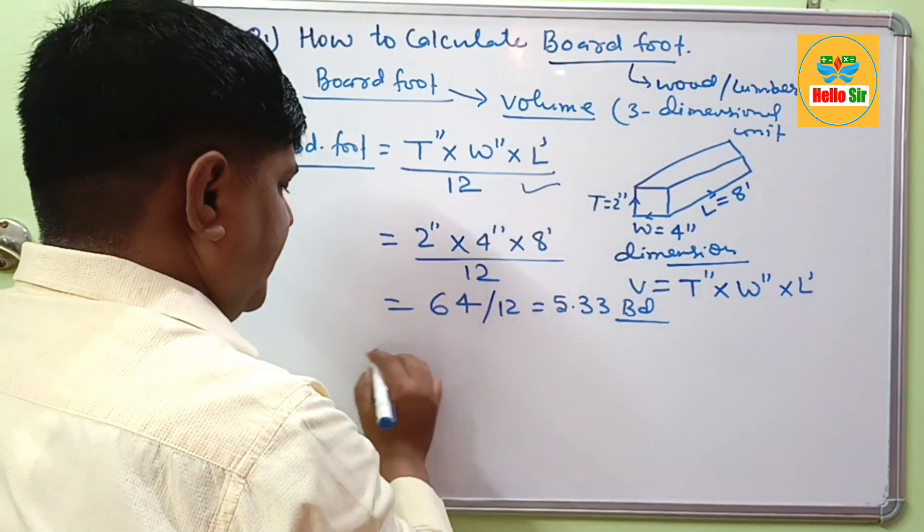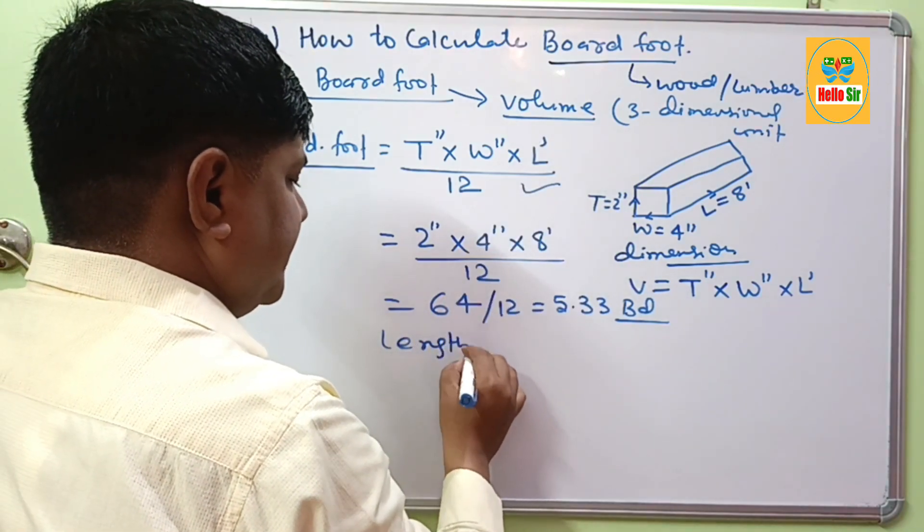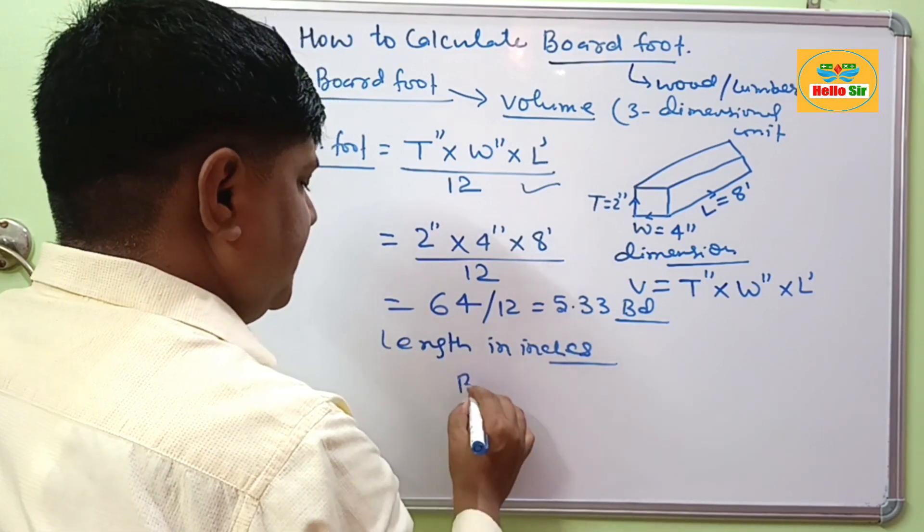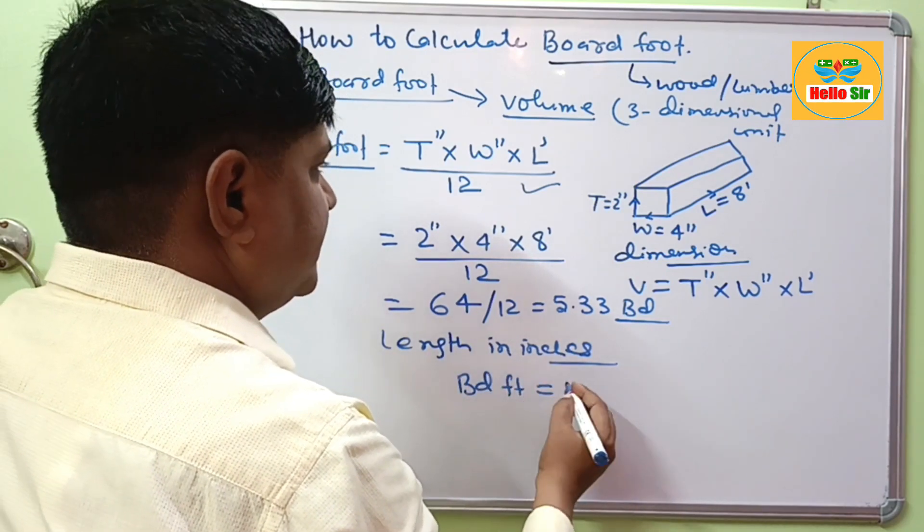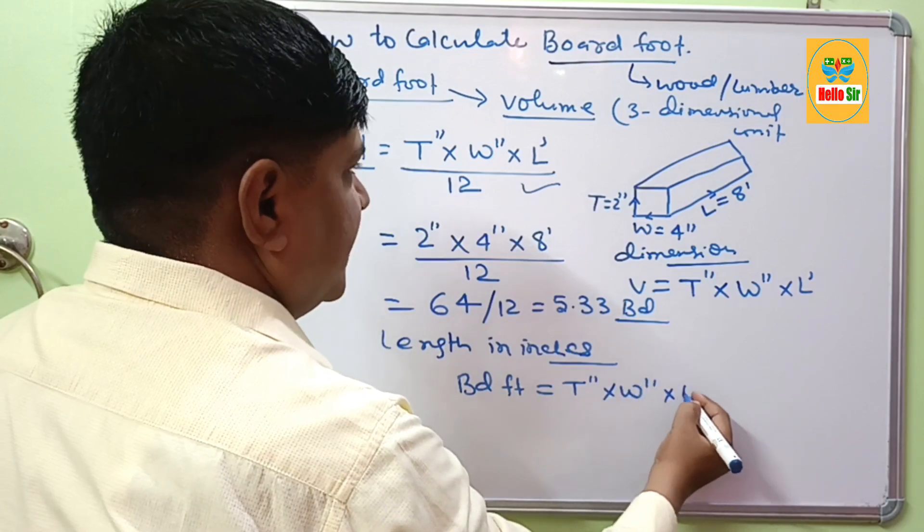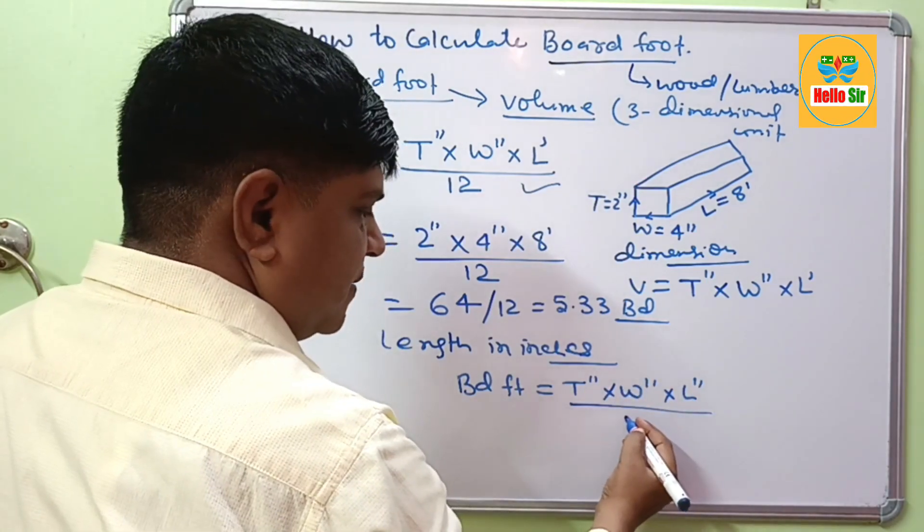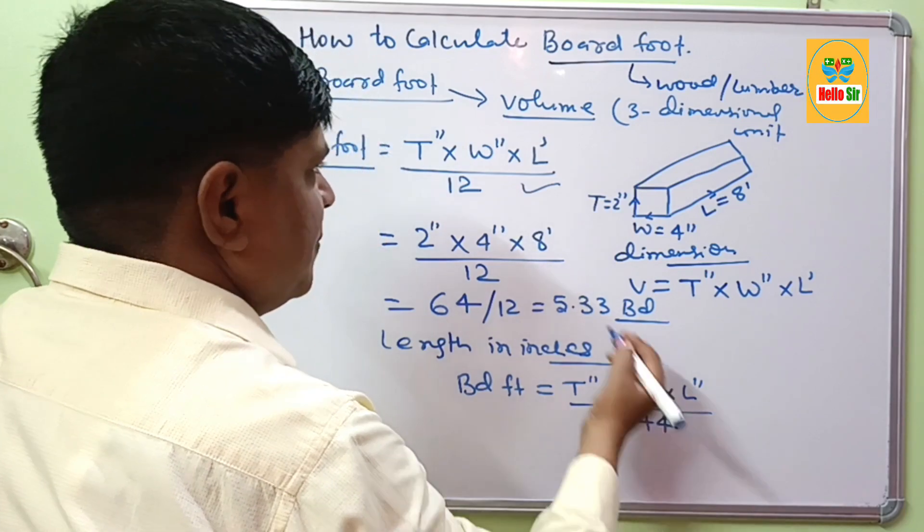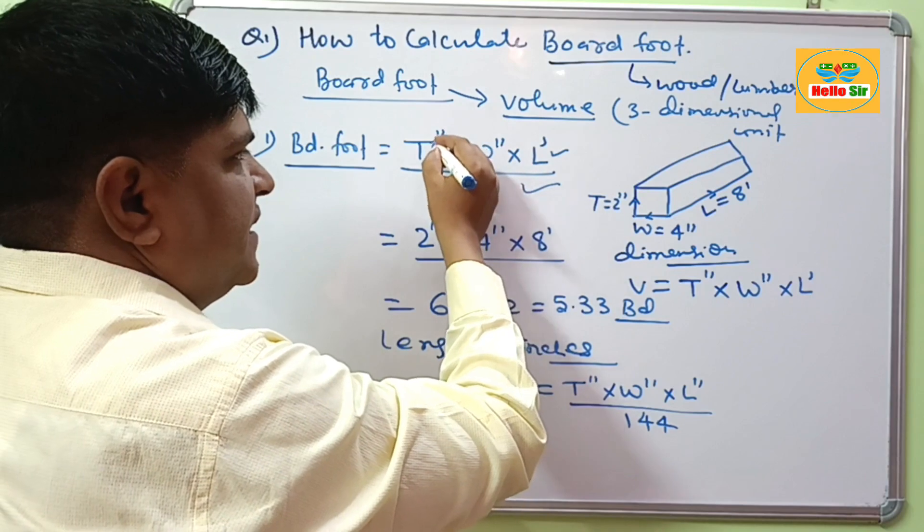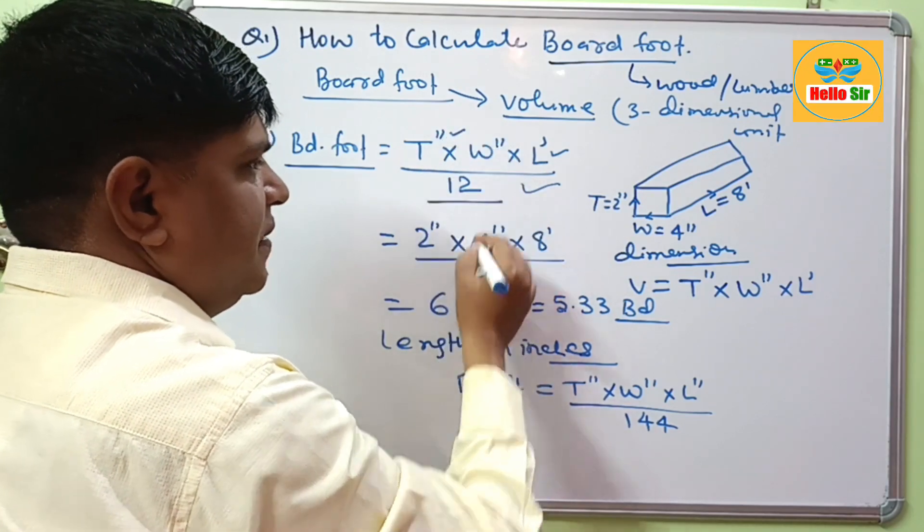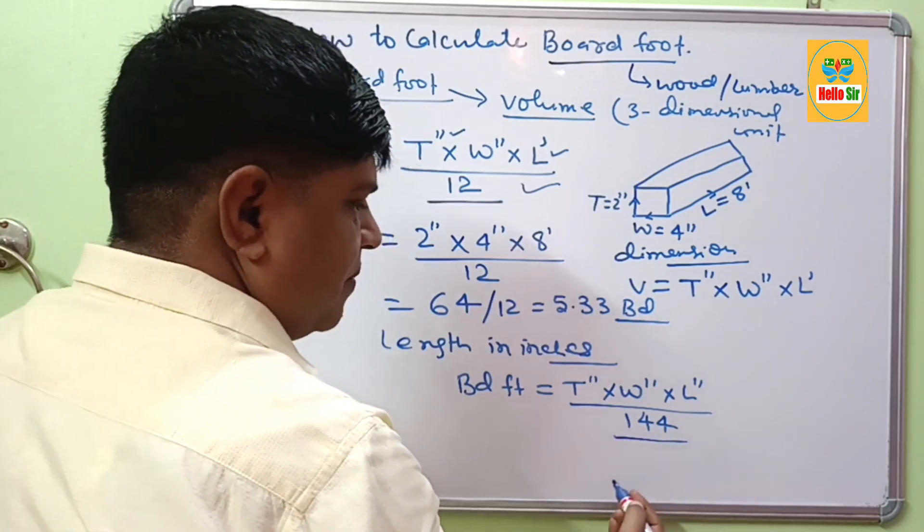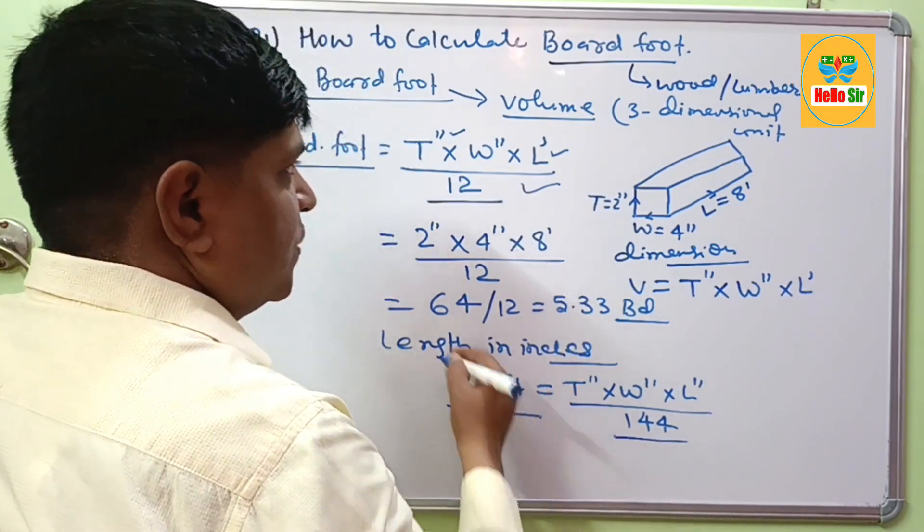And if your length is given in inches, then you use another formula. Board feet is equal to thickness in inches, width in inches and length also in inches. Then you divide by 144. Remember this, if length is in foot, width in inches and thickness in inches, then you divide by 12. And all three dimensions in inches, then you divide by 144 to calculate the board feet.